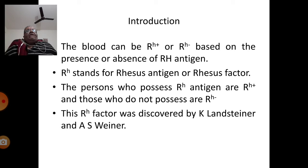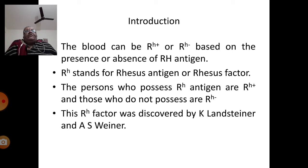Apart from ABO blood groups, blood can be Rh positive or Rh negative based on the presence or absence of Rh antigen. This was for the first time found in the erythrocyte membranes of rhesus monkeys, hence the name Rh factor. Persons who possess this antigen on the membrane of their erythrocytes are Rh positive, and those who do not have it are designated Rh negative.